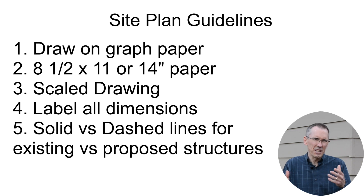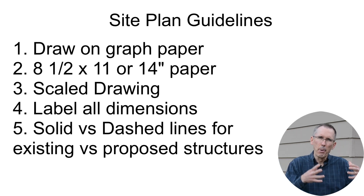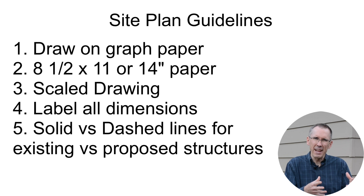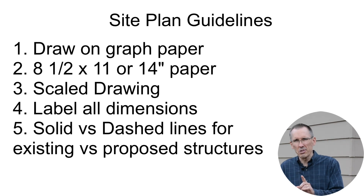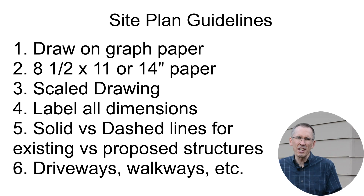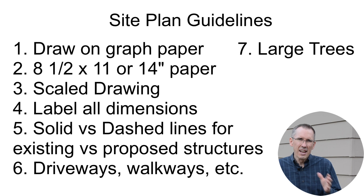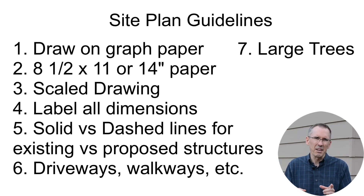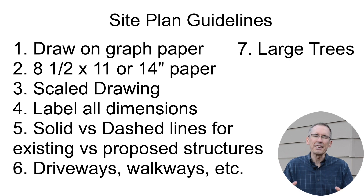Number five, some site plans show existing structures drawn with solid lines and proposed structures or items drawn with dashed lines. Other examples may use bolded lines to represent what is to be added. You just need to be able to distinguish the difference between what exists and what is proposed. Number six, existing and proposed driveways, walkways, patios, etc. must all be shown. Number seven, if you have very large trees on your property, some building authorities want to see them drawn on the site plan. Generally speaking, if your tree is more than two feet in diameter, just draw it on the site plan, showing its diameter and its species.